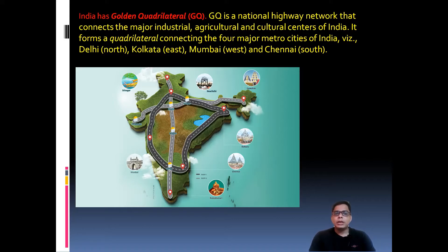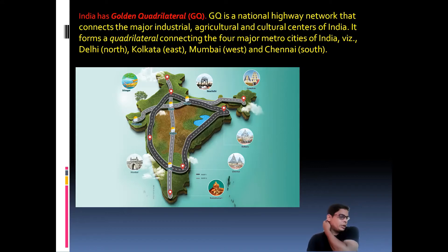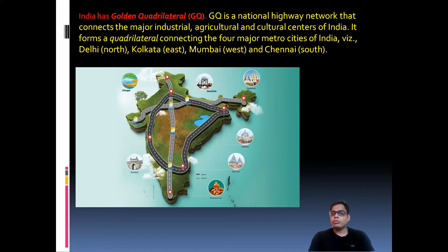Apart from the quadrilateral, there are also corridor connections. The East-West Corridor connects Guwahati in Assam to Porbandar in Gujarat. The North-South Corridor connects Kashmir in the north to Kanyakumari in the south.